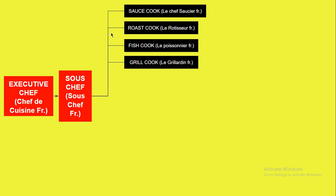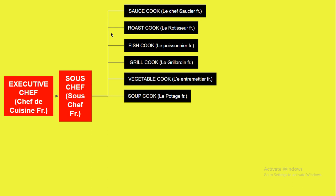Then there is the Vegetable Cook — L'Entremetier — a chef who cooks vegetables for both meat dishes and vegetarian dish preparations. After that is the Soup Cook — Le Potager — who is responsible for preparing different types of soups.